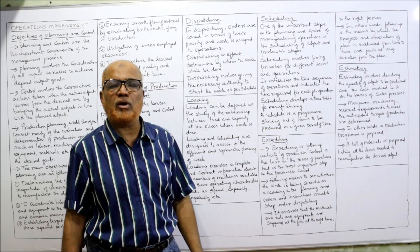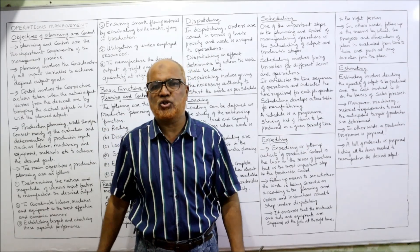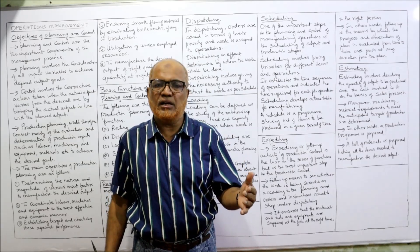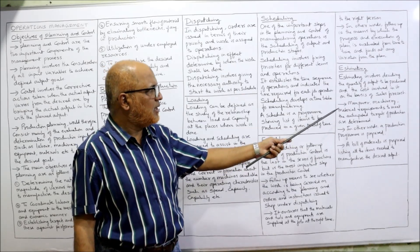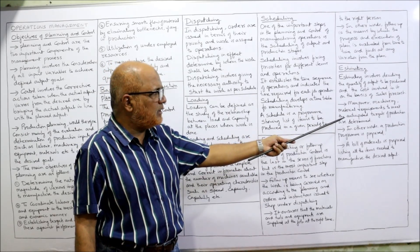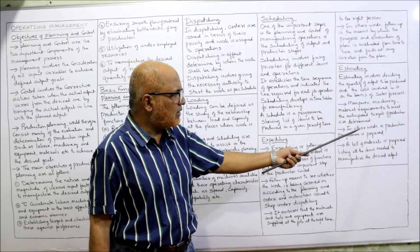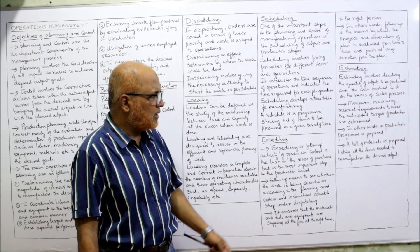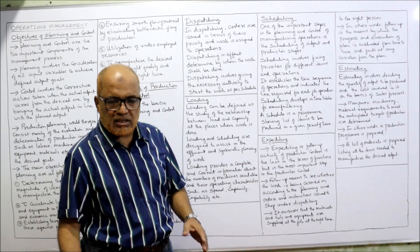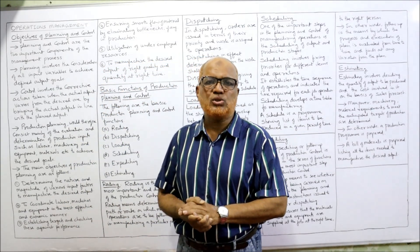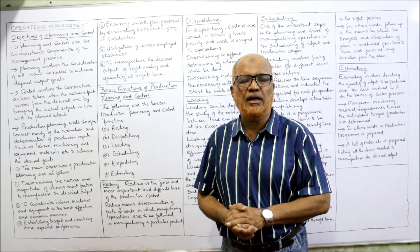First we make the sales forecast, on the basis of which we plan production. In estimating, we determine how much material and labor is required. The manpower, machinery, and material requirements to meet the anticipated production target are determined in this step. A production program and a bill of materials listing all items needed to manufacture the product are prepared. These are the functions of production planning and control, and we will continue the next topic in the next video.